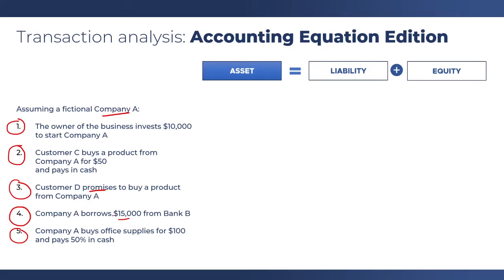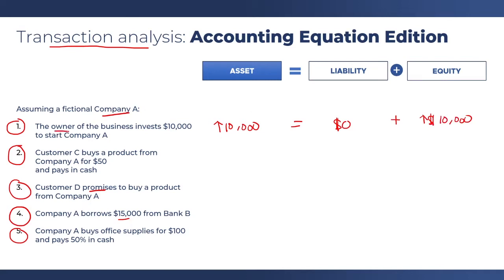Since we have not yet discussed how to create a journal entry from the transactions, our task now is just to identify the effects of the transactions on the accounting equation. This is an exercise on transaction analysis. For the first one, the owner of the business invests $10,000 to start company A. We know that it affects assets because we received cash of $10,000. Since we did not borrow the money from the bank, liabilities is zero, and we increase our equity by the same amount of $10,000, because this is money coming from the owner of the business.